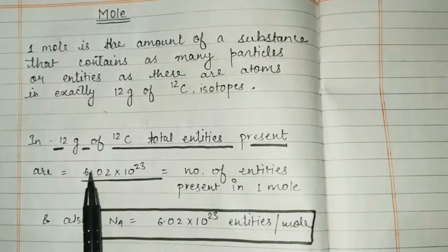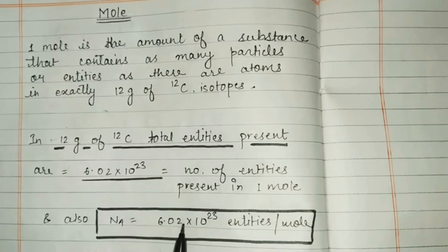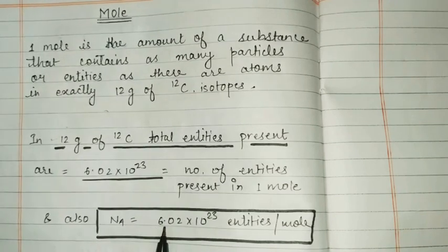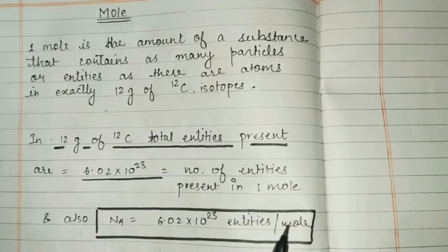And as we also know from Avogadro's law, this entity also indicates the Avogadro number. Avogadro number indicates the number of 6.02 into 10 to the power 23 entities per mole.